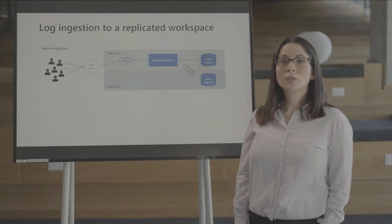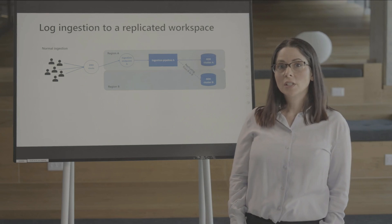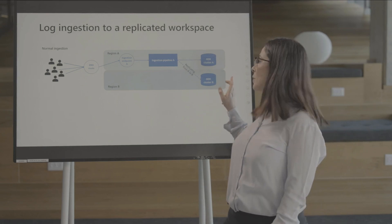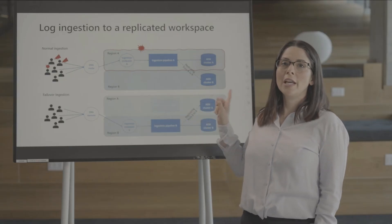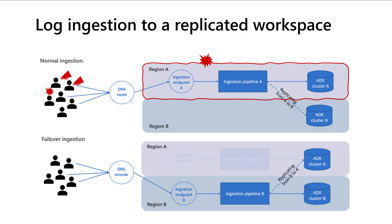Let's see what it means for log ingestion. If an outage impacts your primary workspace, no need to panic. You can trigger failover to reroute all ingestion and query requests to your secondary workspace. If the primary workspace isn't available, the logs are buffered on the secondary region until the primary can process them, and up to 11 days.